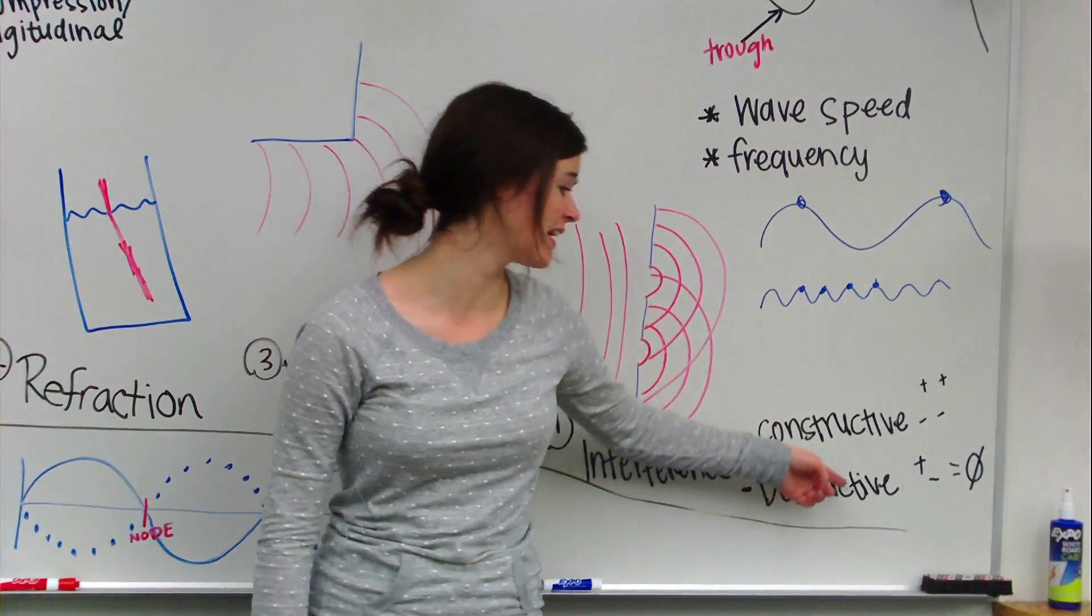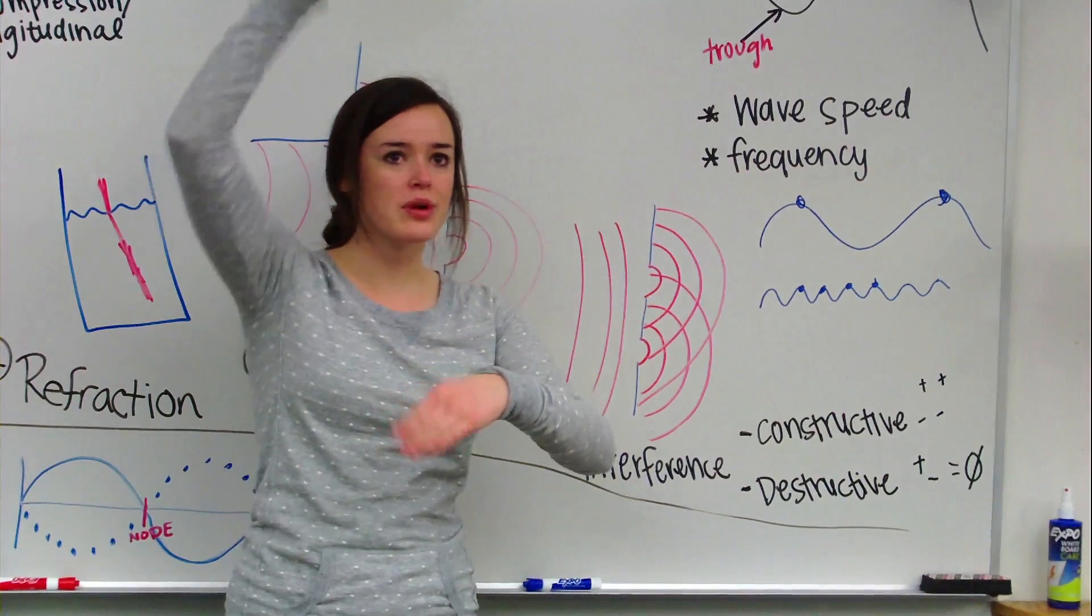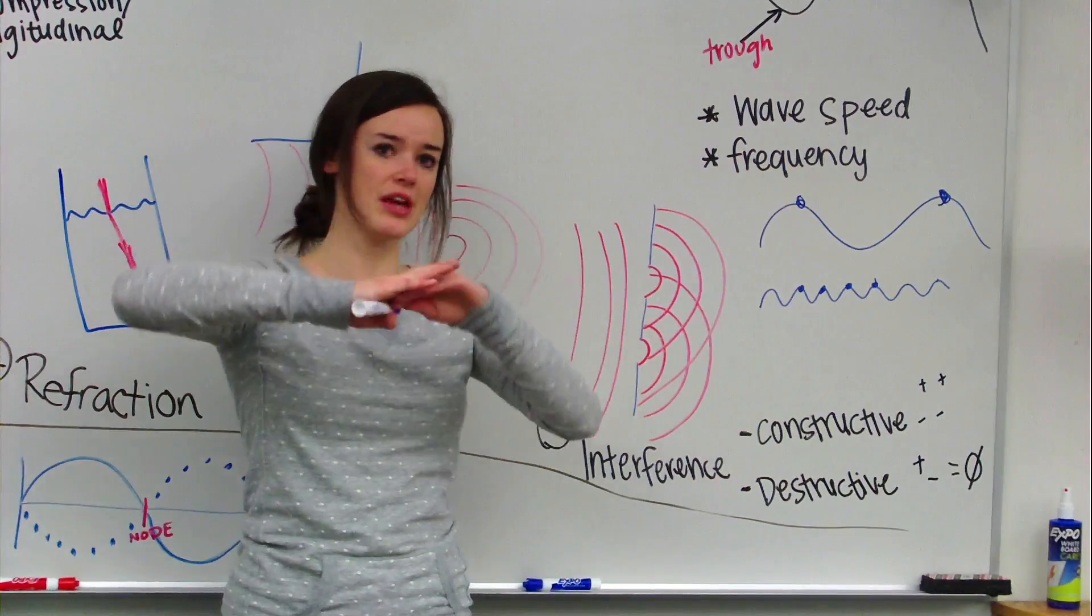With destructive interference, you're going to have like a crest, which is really high, and a trough, and with that, it kind of cancels itself out and makes a node.